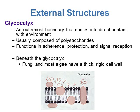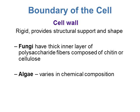Beneath the glycocalyx, some eukaryotic microorganisms like fungi and algae have a really thick, rigid cell wall. This cell wall is rigid and provides support to help give the cell structure and shape. Fungi have a really thick inner layer of polysaccharides — a very complex carbohydrate — usually chitin or cellulose in structure. Chitin makes up the exoskeleton of insects and lobsters, so it's a very hard polysaccharide. Cellulose is found in plants and is the stringy fiber material.